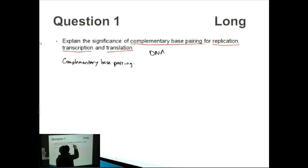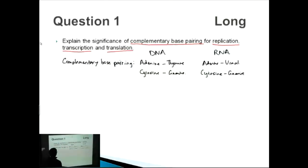Let's talk about DNA first. In DNA, adenine binds to thymine, whereas cytosine binds to guanine - ATCG. In RNA it's a little bit different. Cytosine still binds to guanine, but adenine binds to uracil. So that's our first thing.